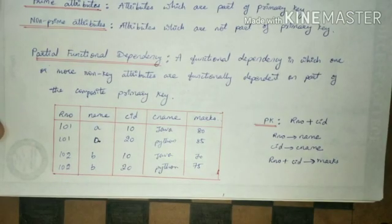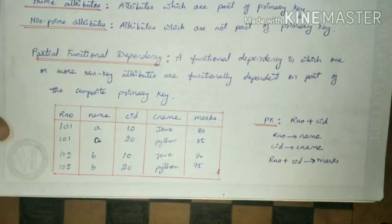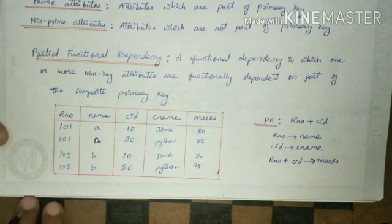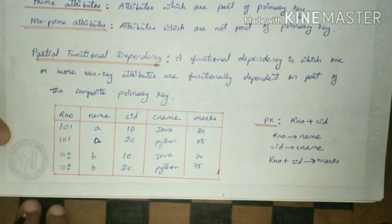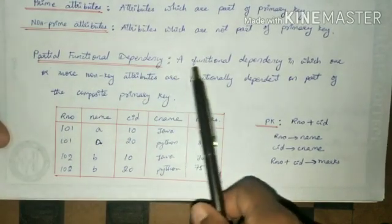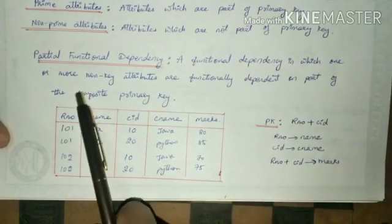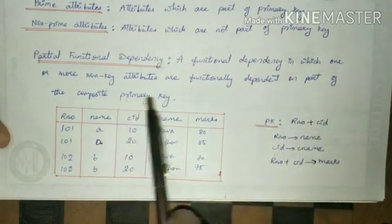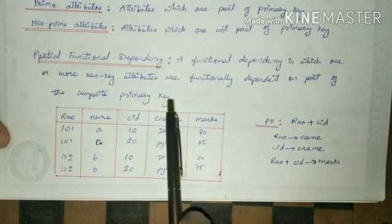Hi all, welcome to SSL Technologies. Today we will be learning about partial functional dependency and fully functional dependency in DBMS. Before going through this video, please go through the video on functional dependency where I have explained complete functional dependency with prime attributes and non-prime attributes. Now we will see partial functional dependency. A partial functional dependency is a functional dependency in which one or more non-key attributes are functionally dependent on part of the composite primary key.